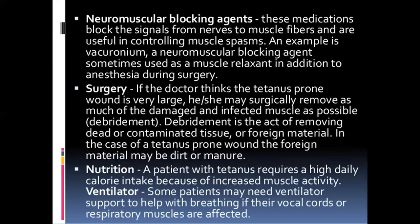Neuromuscular blocking agents: these medications block the signal from the nerves to muscle fibers, and this is useful in controlling muscle spasms. An example is Vecuronium. Neuromuscular blocking agents are also sometimes used to relax the muscles in addition to anesthesia during surgery.